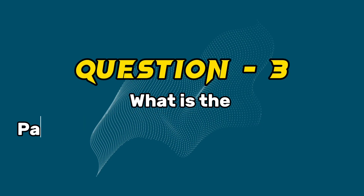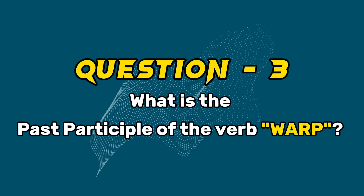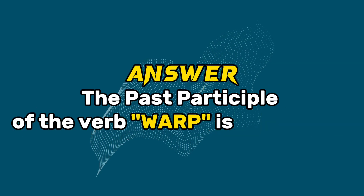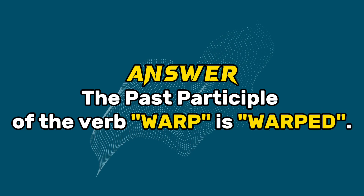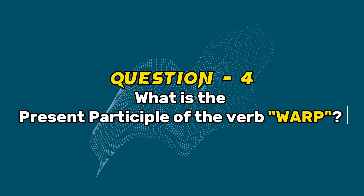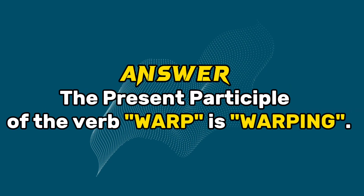Question 3: What is the past participle of the verb warp? Answer: The past participle of the verb warp is warped. Question 4: What is the present participle of the verb warp? Answer: The present participle of the verb warp is warping.